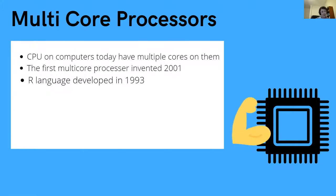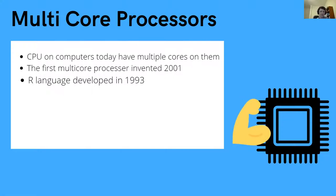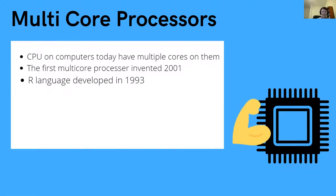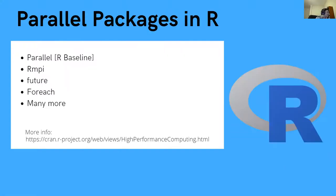The R language was developed in 1993. When R was first being developed, multi-cores didn't exist. Fortunately, very smart people have been developing various techniques to implement parallelization in R, and that's where libraries come in.